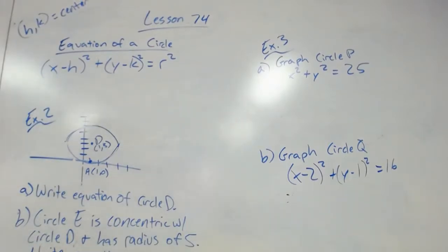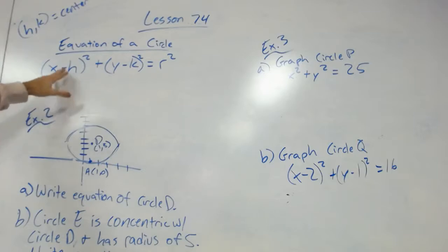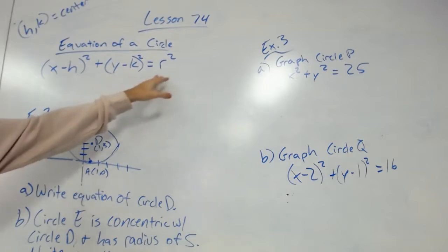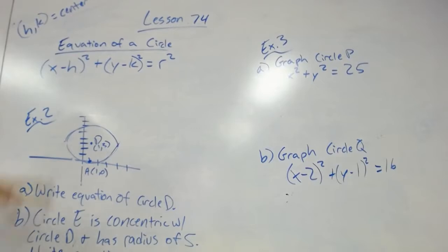Lesson 74, we're going to look at equations of circles. The equation of a circle is a formula you just kind of got to memorize: (x - h)² + (y - k)² = r².